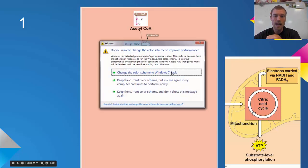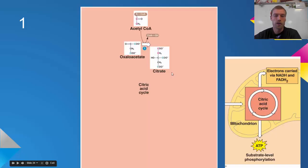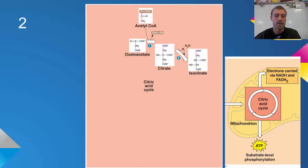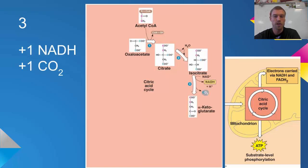The first molecule that is produced is called citrate, which is why this is called the citric acid cycle. The next molecule produced is isocitrate. We've got some water being used to help rearrange that.